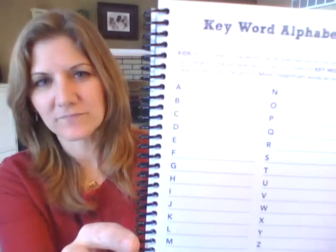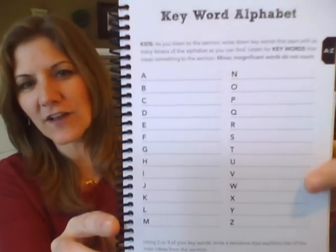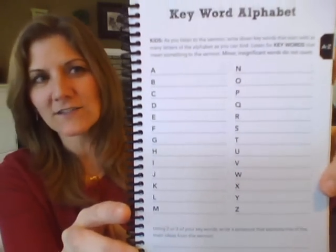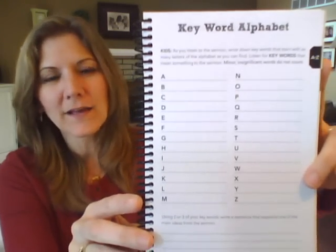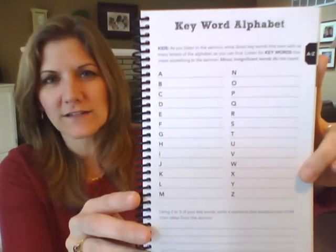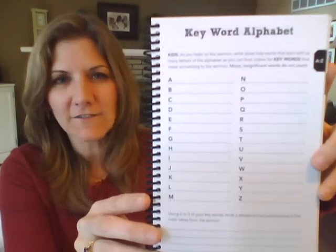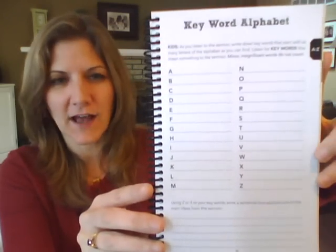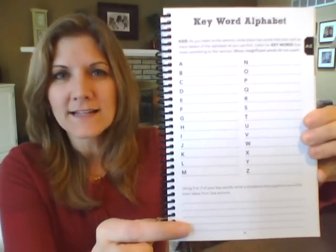The next one is Keyword Alphabet. You're going to listen for keywords in the sermon for as many letters of the alphabet as you can find. You won't find a keyword for every single letter, and that's okay — I want you to listen for significant words about what the preacher is preaching on, not little small filler words. Near the end of the sermon, or on the way home with your parents' help, take a couple of those keywords and write a sentence using them that sums up what the sermon was about.